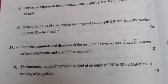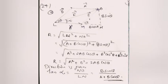Question 27, Part A: Find the magnitude and direction of the resultant of two vectors A and B in terms of their magnitudes and angle θ between them. Answer: R equals the square root of (A plus B cosθ) squared plus (B sinθ) squared, which expands to the square root of A squared plus 2AB cosθ plus B squared cos squared θ plus B squared sin squared θ, giving R equals the square root of A squared plus B squared plus 2AB cosθ.